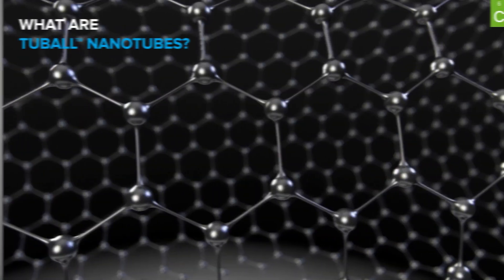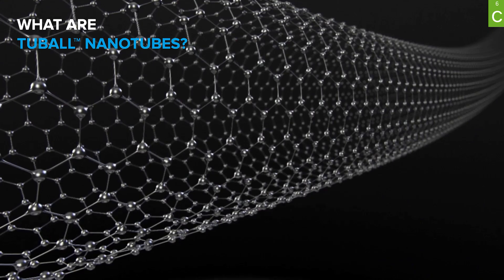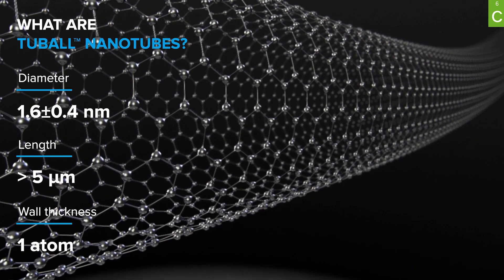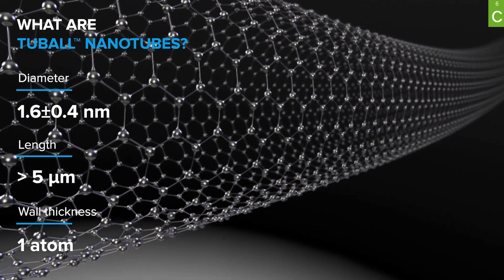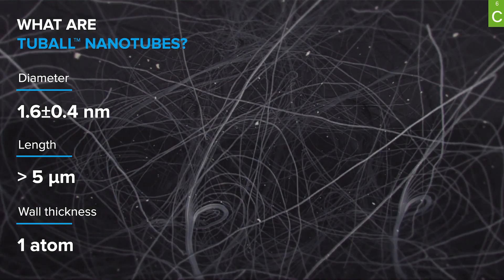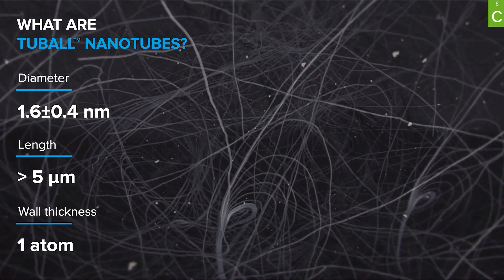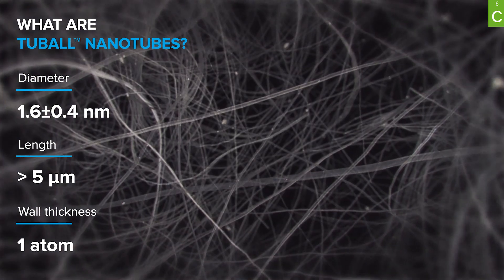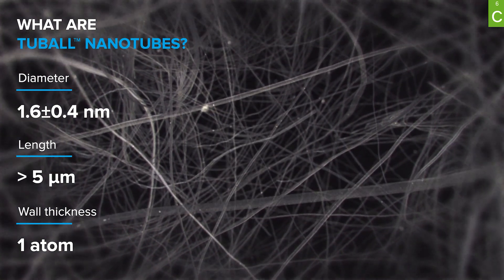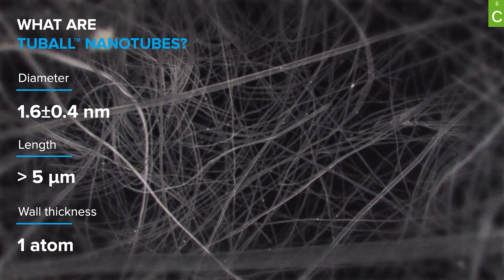What are tubal nanotubes? Tubal nanotubes are single-wall graphene carbon nanotubes — a powder of tubes with a thickness of one atom. The diameter is about 1.6 nanometers and the length roughly 5 microns. Tubal graphene nanotubes can be used as a conductive agent in different polymer systems.